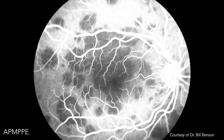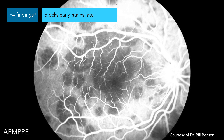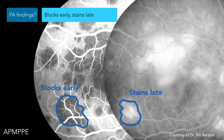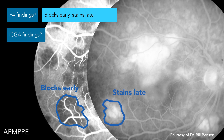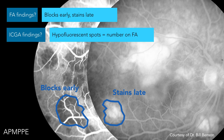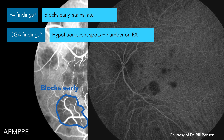Picture of AMPPE — this is obviously an FA. FA findings, Tamana: early hypofluorescence, late staining. Right — blocks early, stains late. So it's in that blocks-early, stains-late category. Most of these are, and it's worth knowing which ones are the exceptions. There's my blocks-early; there's your stains-late — same patient. ICG findings: the hypofluorescent spots are equal to the number on FA, not greater than the ones you see on FA. That's the hardest one for me to remember. Those ICG spots are the same as her FA.